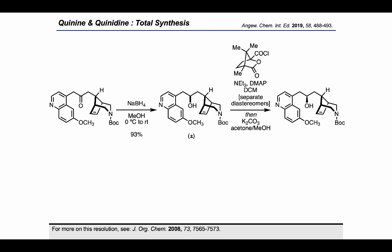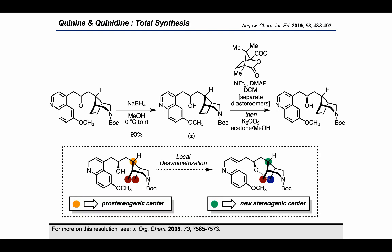Sodium borohydride was then used to form the racemic secondary alcohol, which could be resolved by treatment with camphanic chloride, forming a separable diastereomeric mixture. Hydrolysis of the desired diastereomer then led to the target enantioenriched secondary alcohol. The authors then sought to take advantage of the local symmetry present in the bicycle by performing a local desymmetrization.